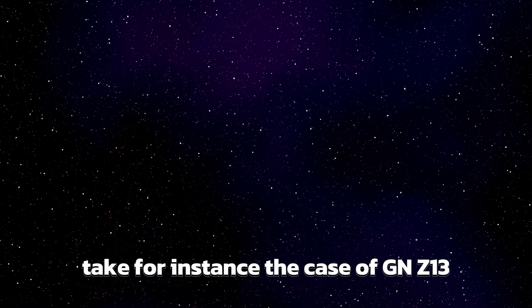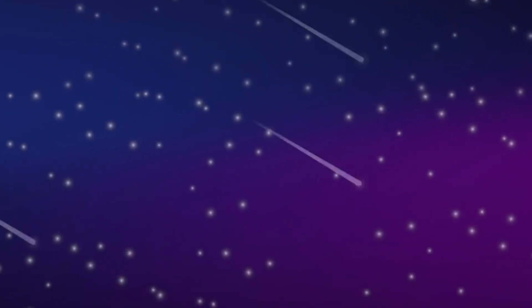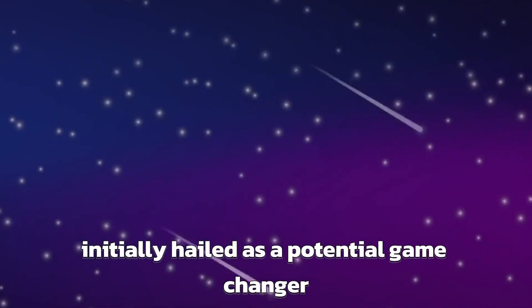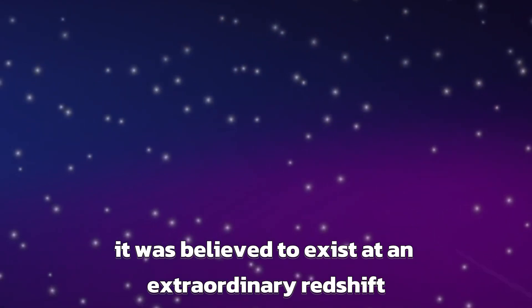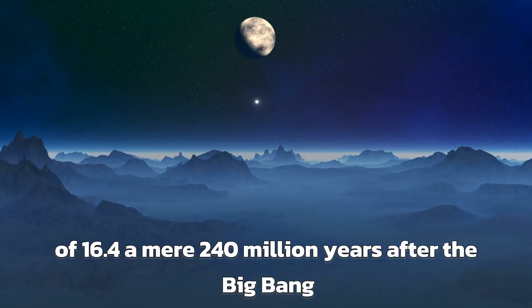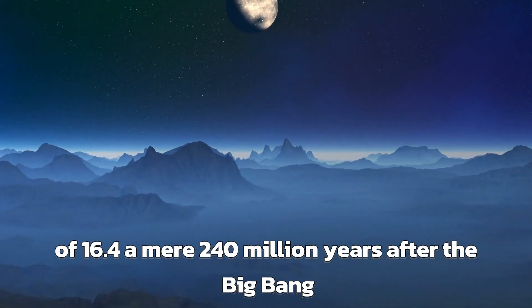Take, for instance, the case of one candidate initially hailed as a potential game-changer. It was believed to exist at an extraordinary redshift of 16.4, a mere 240 million years after the Big Bang. Yet, upon closer scrutiny, it was revealed to be an imposter, with its true redshift measured at 4.9.